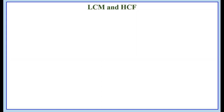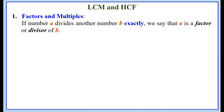LCM and HCF. The first point is factors and multiples. If a number A divides another number B exactly, that is, when B is divided by A, the remainder must be 0. Then we say that A is a factor or divisor of the number B.